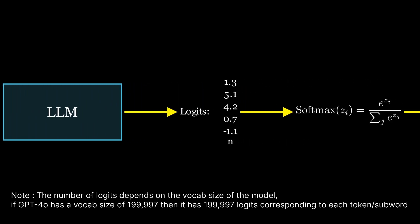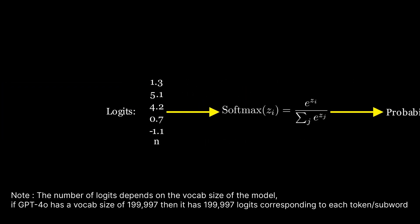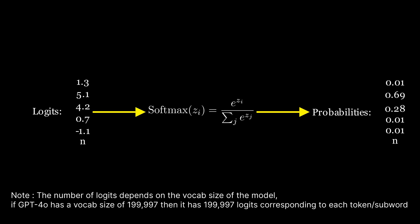However, the logit scores are not intuitive enough for us to understand the score for each word in the vocabulary. Therefore, we pass them through a softmax function to generate a probability score for each word, which is found to be far more intuitive.